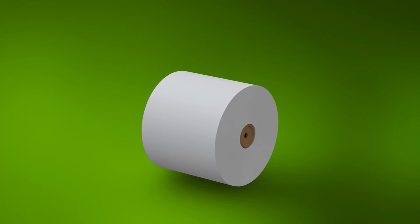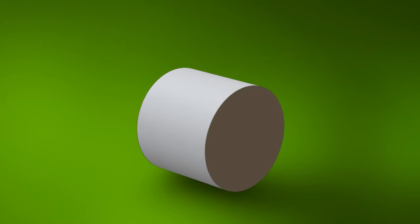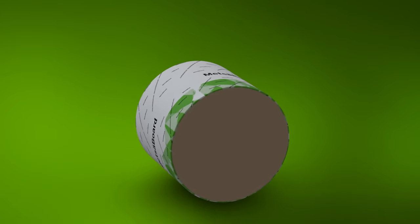For reel deliveries, the reel ends are protected by covers made from corrugated board, and the rest of the reel is protected with moisture-proof wrapping.